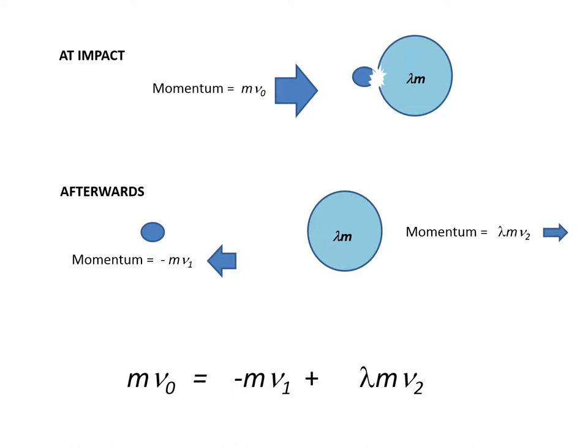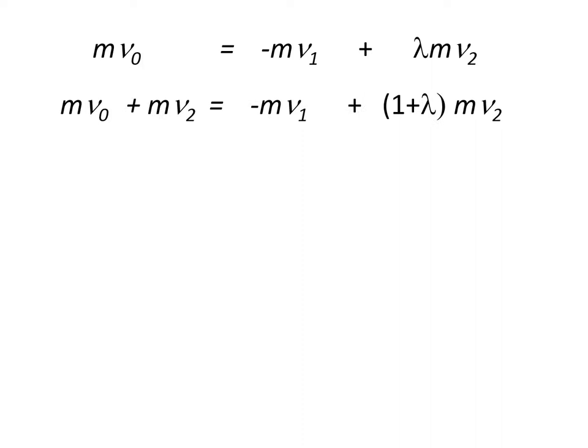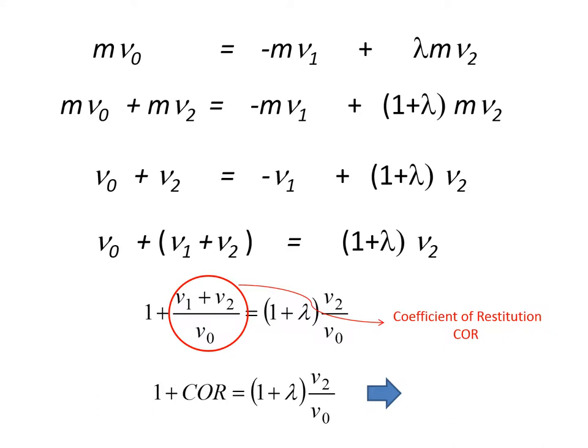We start with the equations of momentum, then add mV2 to both sides of the equations. In the end, you get the expression of V2 divided by V naught expressed as 1 plus coefficient of restitution divided by 1 plus lambda.